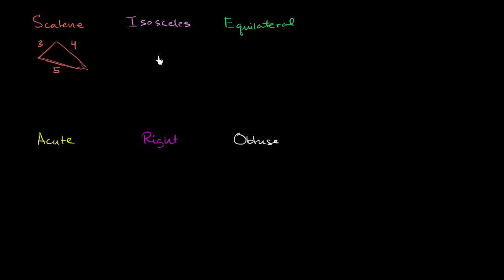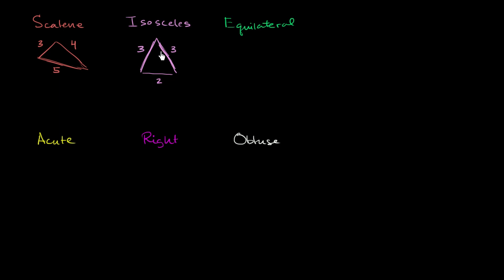An isosceles triangle is a triangle where at least two of the sides have equal lengths. So for example, this would be an isosceles triangle. Maybe this has length 3, this has length 3, and this has length 2. Notice, this side and this side are equal, so it meets the constraint of at least two of the three sides having the same length.